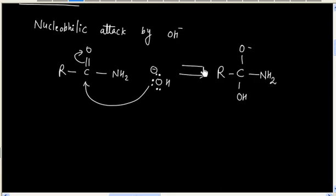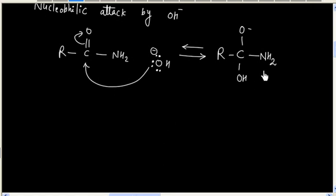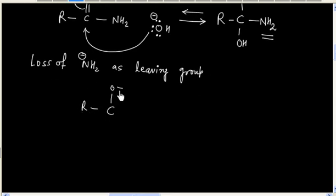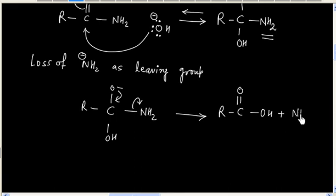Now this step is reversible, that is we can remove OH- to get the initial reactant. In the next step, we have loss of NH2- as a leaving group. OH- pushes out NH2-, so this NH2- gets expelled and we will have acid plus NH2-.